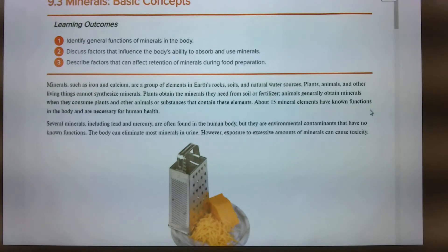Let's dive into 9.3. This is a small section, but I think we can get through this pretty easily. So minerals, basic concepts. Minerals such as iron and calcium are a group of elements of earth, rocks, soils, and natural water sources. Plants, animals, and other living things cannot synthesize minerals. Plants obtain the minerals they need from the soil or the fertilizer. Okay, animals generally obtain minerals when they consume plants and other animals or substances that contain these elements. About 15 elements have known functions in the body and are necessary for human health.